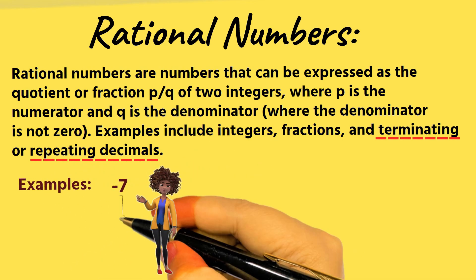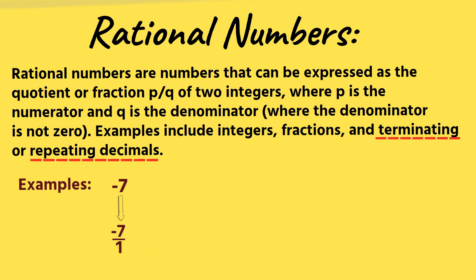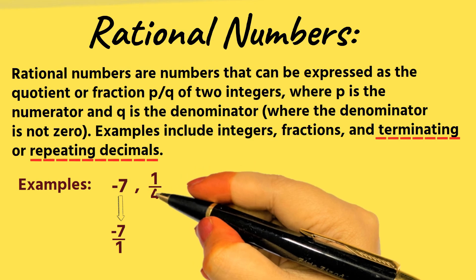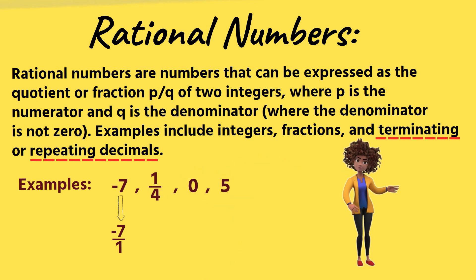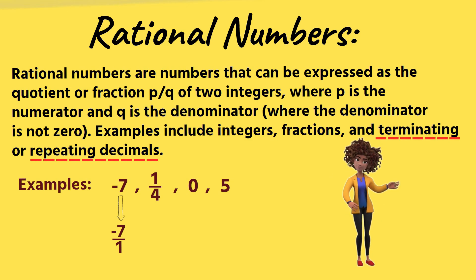Examples: negative 7 can be written as negative 7 over 1; 1 over 4; and 0.5. Rational numbers can be classified further into two types: terminating decimals and repeating decimals.